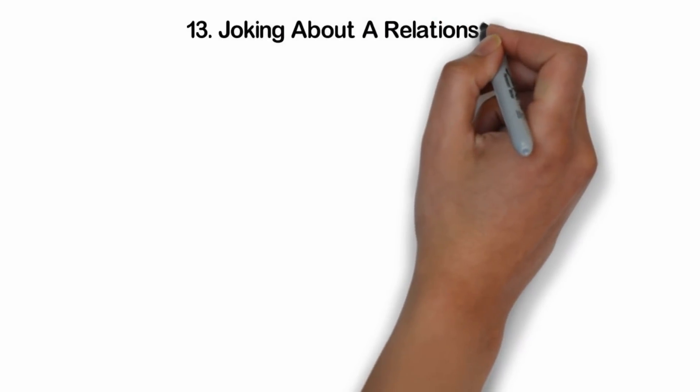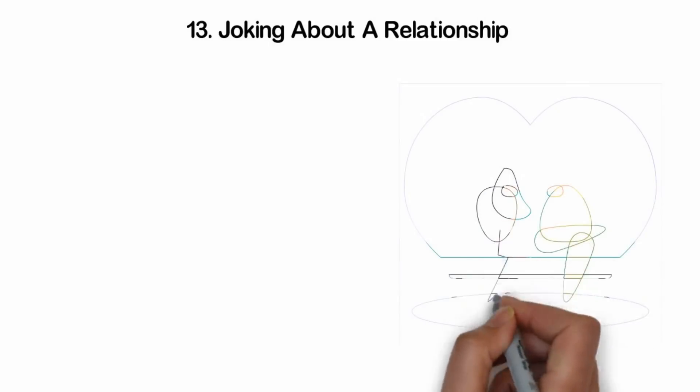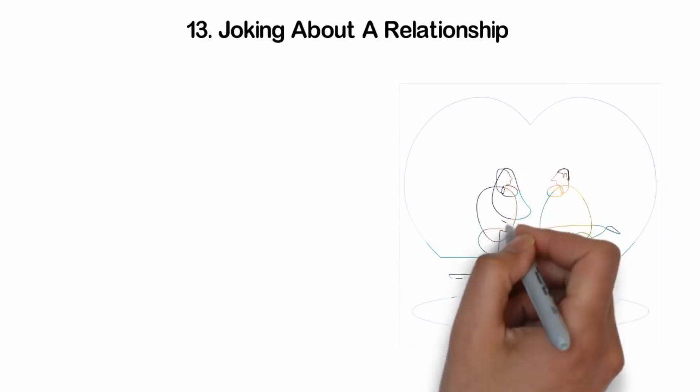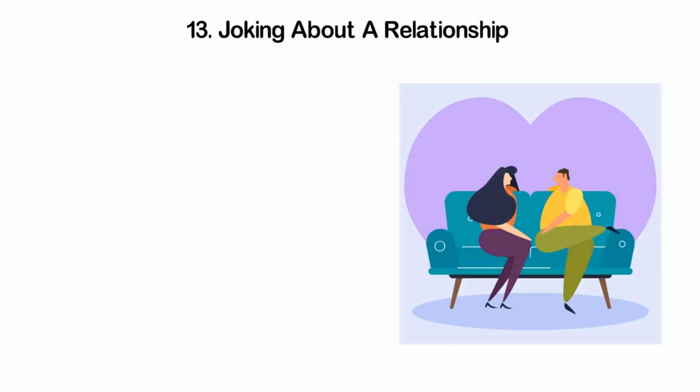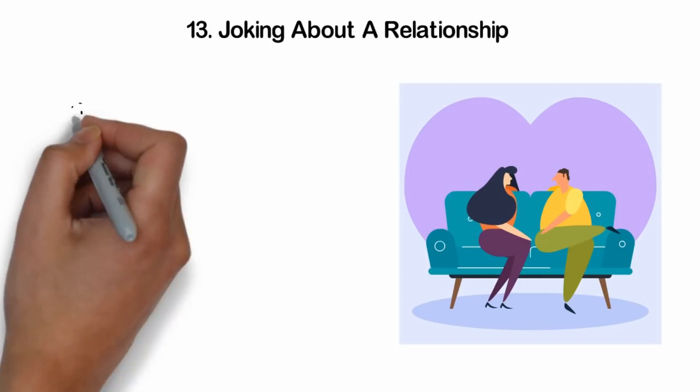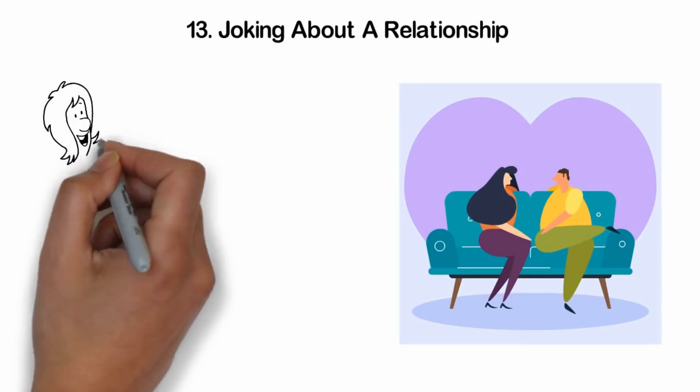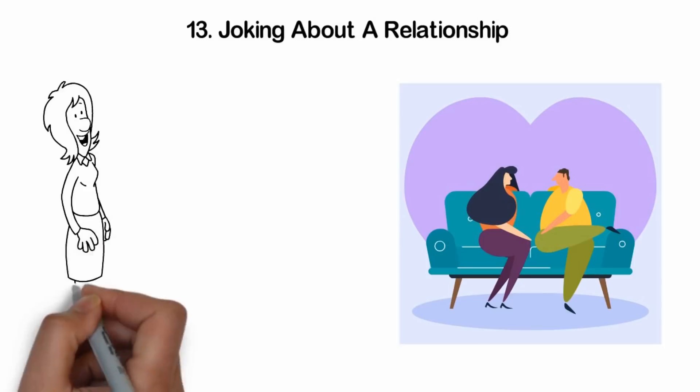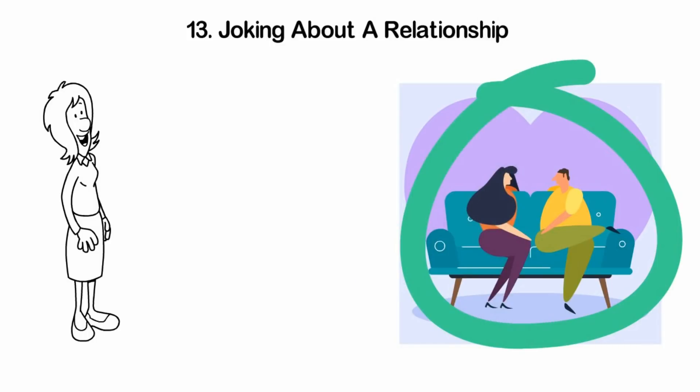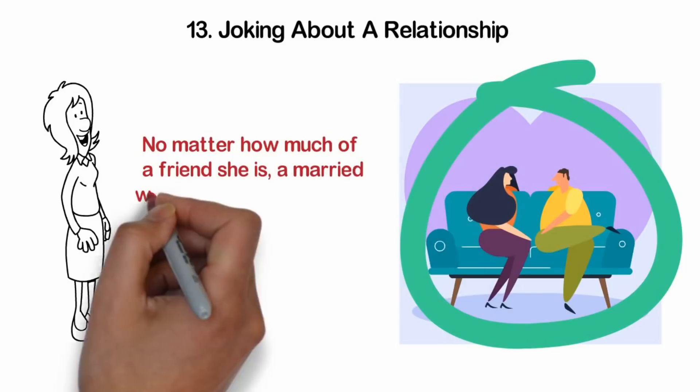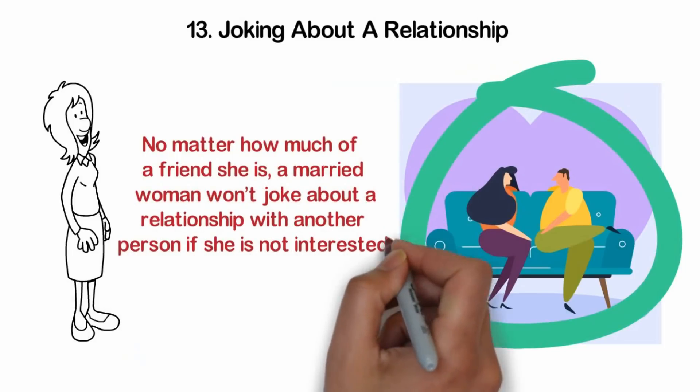13. Joking about a relationship. Sometimes, especially when she is talking about her husband, you find her joking about a relationship between you two. She suddenly wants to discuss what life would be like if you two were together instead of her husband and her. She will pose a scenario to see if it interests you. She could also be joking about a relationship between you two to make a clear signal towards you. She wants you to know that she is interested, and wants you to make the move. In fact, if she talks about a hypothetical situation where you two are in a relationship, then she likes you for certain. No matter how good of a friend she is, a married woman won't joke about a relationship with you if she's not interested in you.